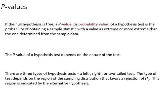The p value of a hypothesis test depends on the nature of the test. There are three types. There's a left, a right, or a two-tailed test, and the type of test depends on the region of the sampling distribution that favors rejection of the null. That region is indicated by the alternative hypothesis.